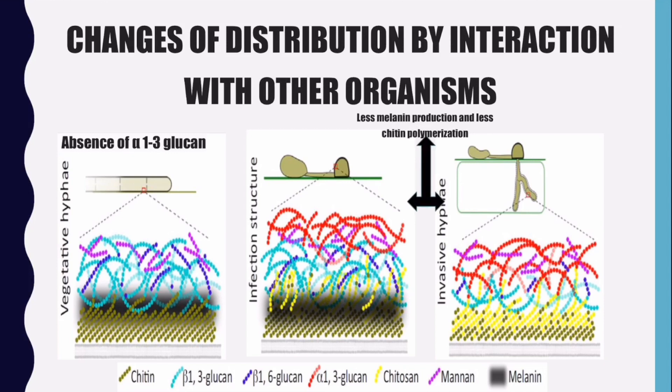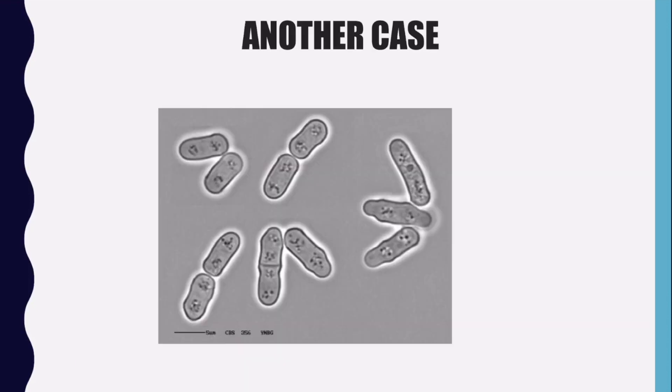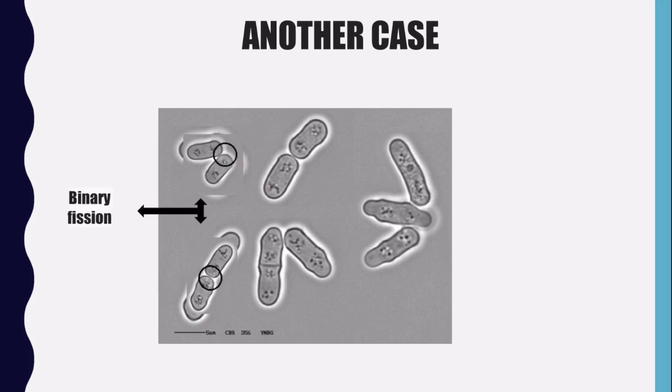When fungi colonize other cells, melanin and chitin production drops as well. Cell division is another example of the changes in cell wall component polymerization.